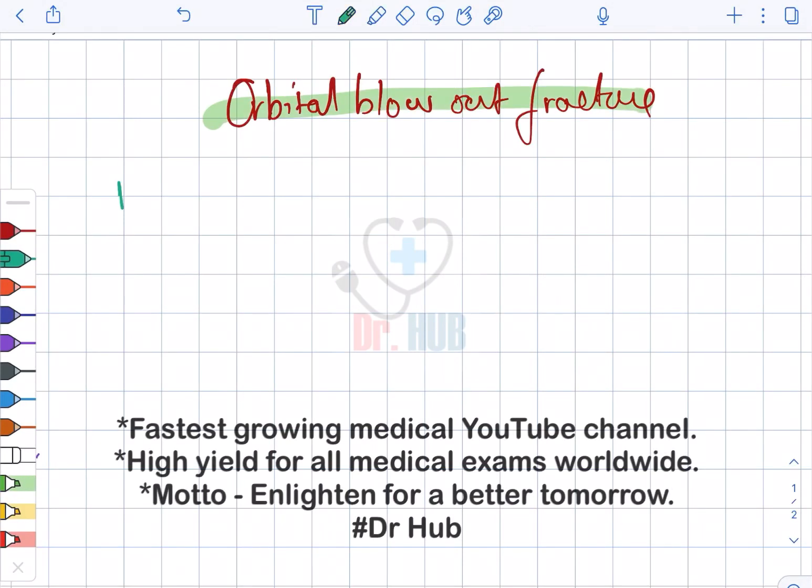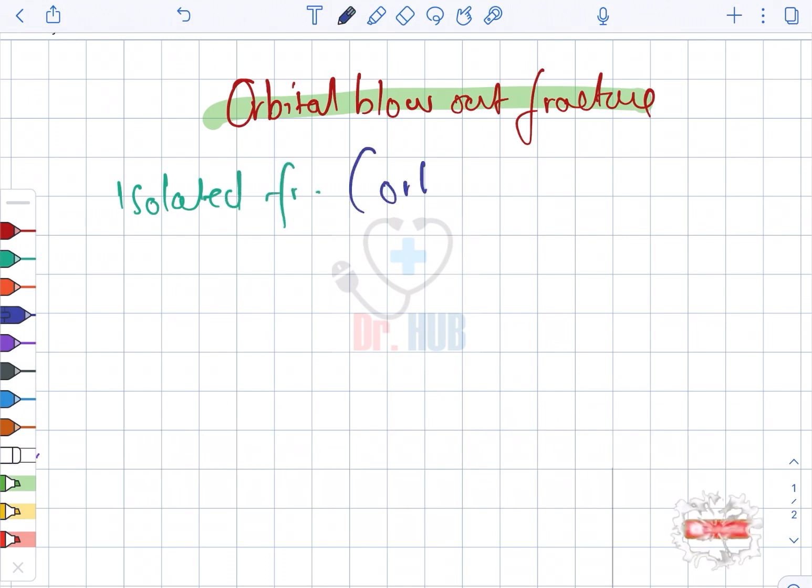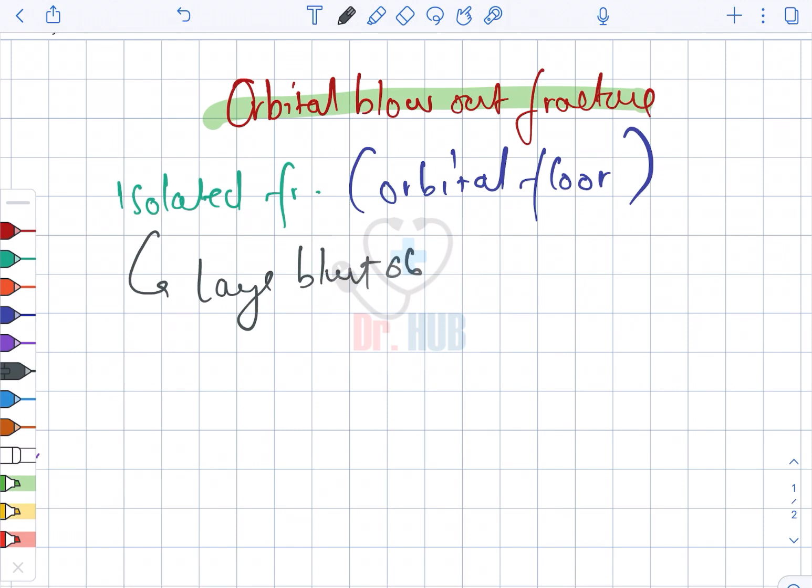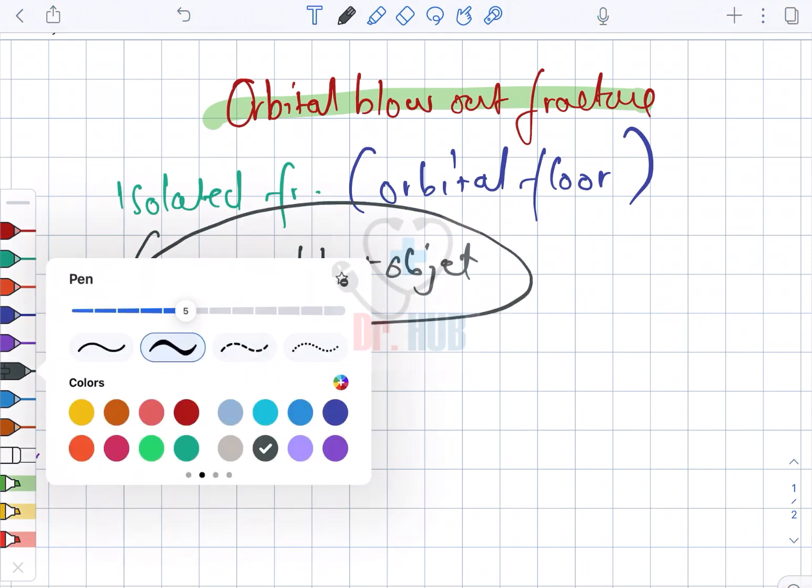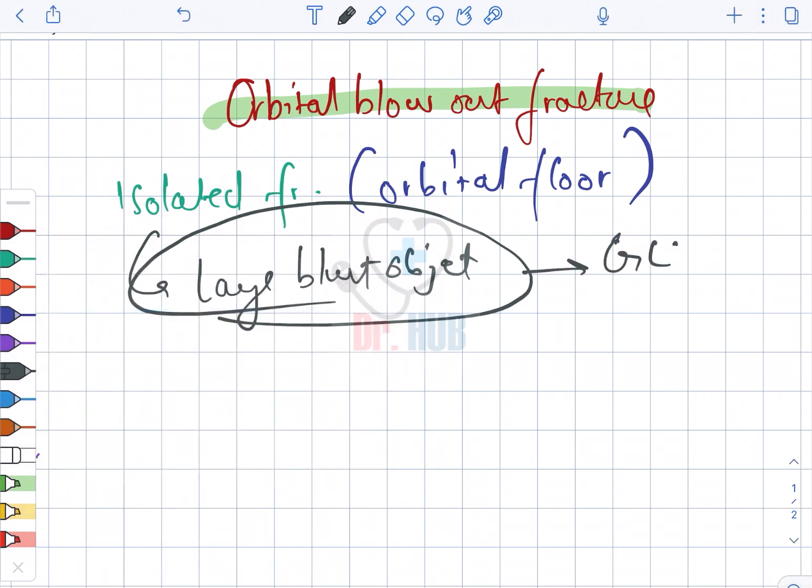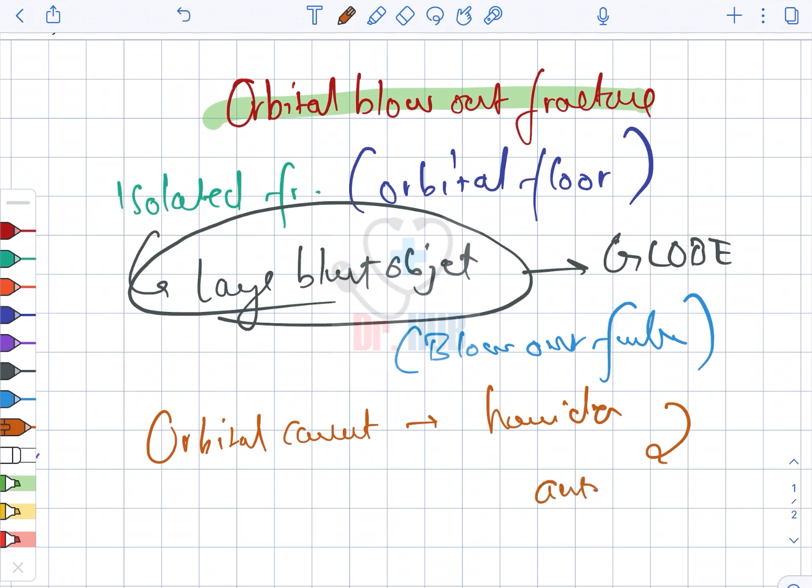Orbital blowout fracture is an isolated fracture to the orbital wall and orbital floor. This occurs when a large blunt object strikes the globe, and due to this it is known as a blowout fracture. The orbital contents herniate through the antrum.